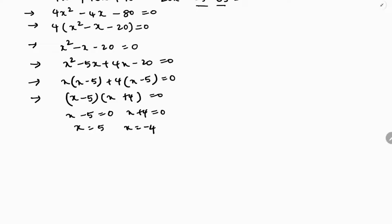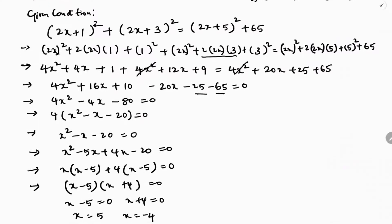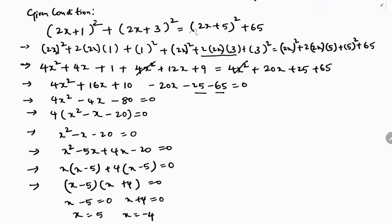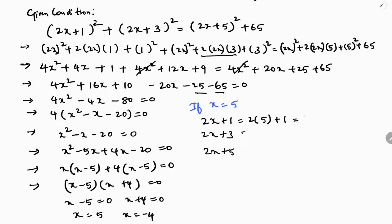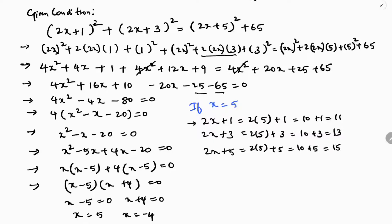Case 1: if x = 5, then the three numbers are 2(5)+1 = 11, 2(5)+3 = 13, and 2(5)+5 = 15. So the three consecutive odd numbers are 11, 13, 15.